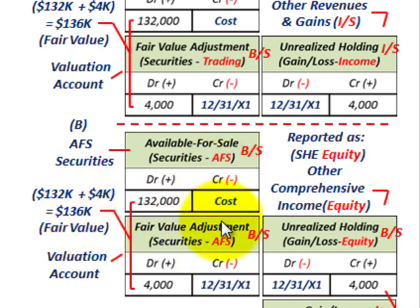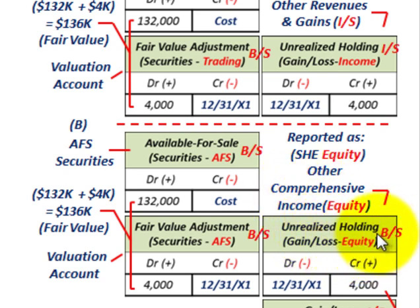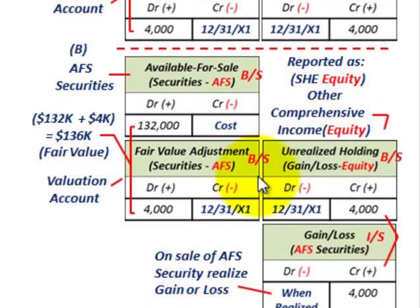For the available-for-sale securities, the fair value adjustment is debited for $4,000, and the credit goes to unrealized holding gain or loss for $4,000 — but the key difference is that for available-for-sale securities, this unrealized holding gain or loss is part of equity on the balance sheet, not income. Recall that for trading securities, this went to the income statement. For available-for-sale, it's reported in shareholders' equity as other comprehensive income.